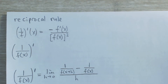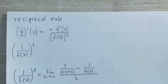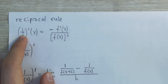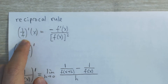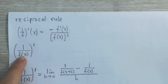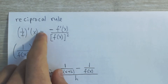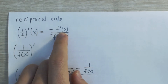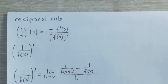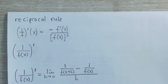Here we're going to prove the reciprocal rule for derivatives, which says that the derivative of the reciprocal of a function — say f of x, like 1 over f of x — is equal to negative times the derivative of f divided by the function f of x squared. We're going to prove this using the limit definition for derivatives.